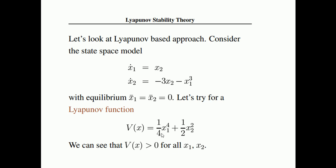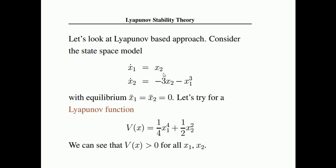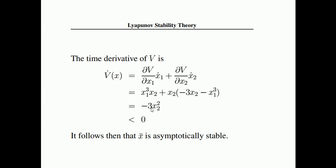The second condition is that V(x) must be positive at all other points except x-bar — this condition is also satisfied. Now compute the time derivative: V-dot equals (∂V/∂x₁)·x₁-dot plus (∂V/∂x₂)·x₂-dot. Substituting x₁-dot and x₂-dot from the system's dynamic equations into this expression, we can evaluate V-dot.